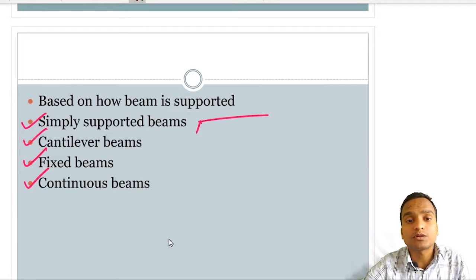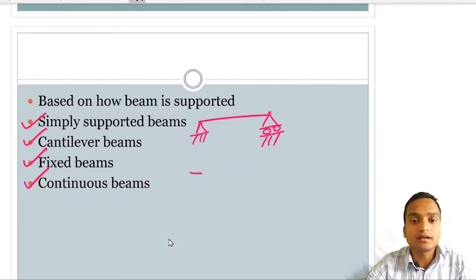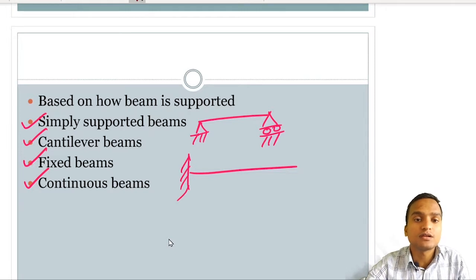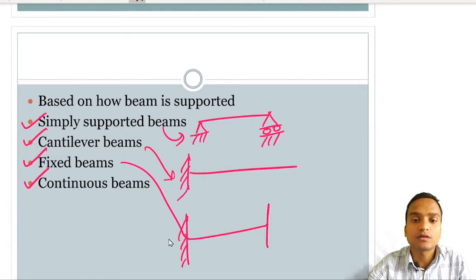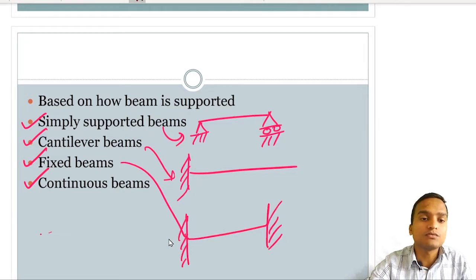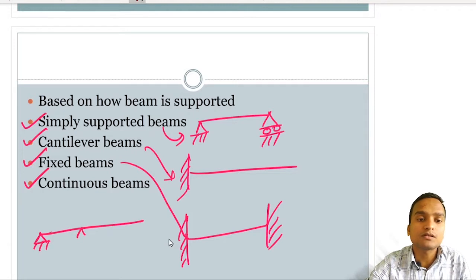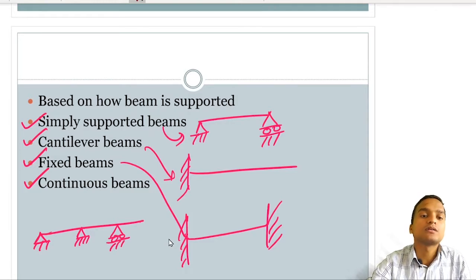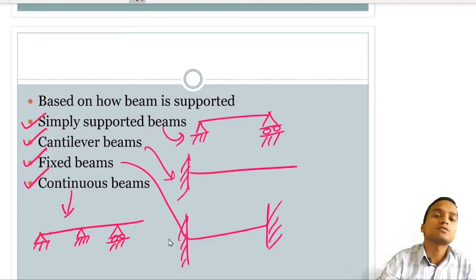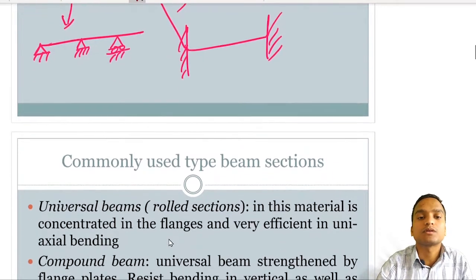A simply supported beam has a roller on one side. A cantilever beam has one side completely free. A fixed beam is fixed on both sides. A continuous beam runs continuously over multiple supports. These are all the different types of beams based on type of support provided.